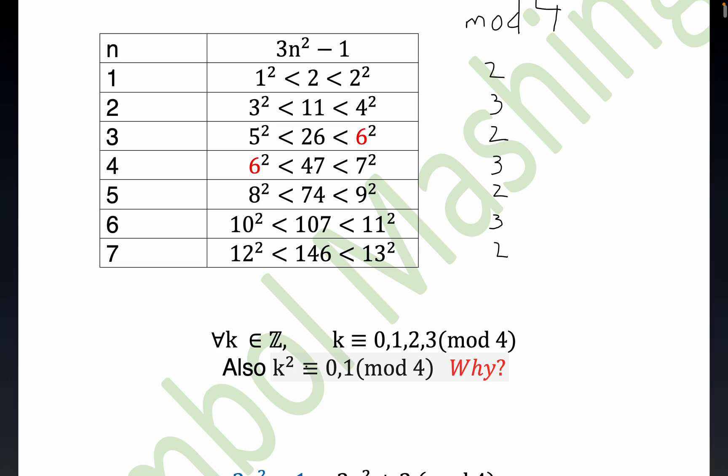Now right here, I used a different letter k, probably not necessary, but every integer leaves a remainder of 0, 1, 2, or 3 when you divide it by 4. That's just clear. That's the division algorithm. If you divide any number by 4, you'll always get a number between 0, 1, 2, or 3.